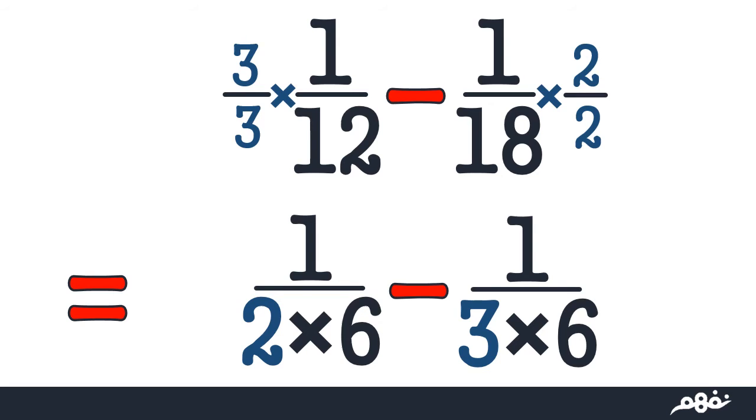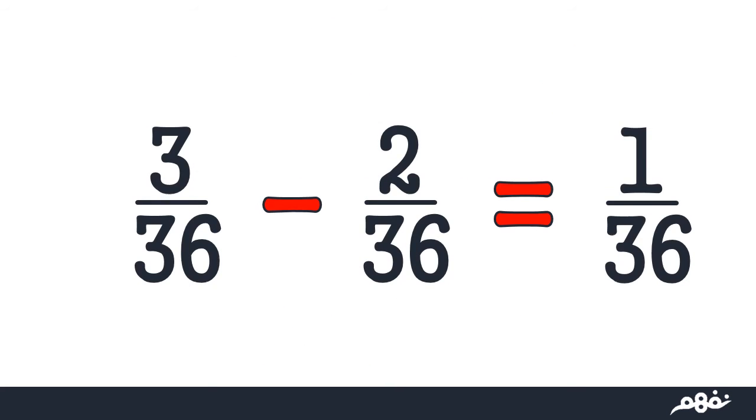...by a form of 1, like 1 multiplied by 3 over 3, and 1 over 3 multiplied by 2 over 2. 3 over 36 minus 2 over 36. Now the same denominator, so we subtract easily. We got 1 over 36.